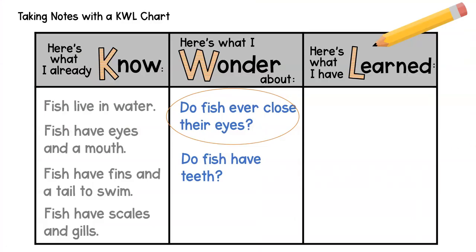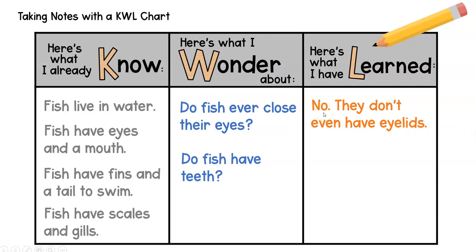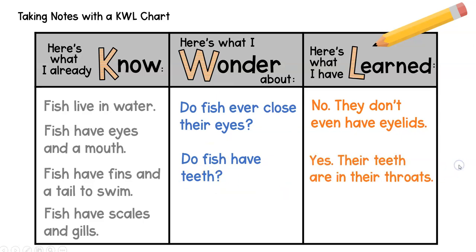Now that I have the answers to my wonder questions, I'm going to go back to my chart. In the wonder column, my first question was: do fish ever close their eyes? We found out — nope, they sure don't. They don't even have eyelids. My second question was: do fish have teeth? Yes! Their teeth are in their throats. They do have them, just in a place you wouldn't expect. I had two wonder questions and two answers. Good job, me.